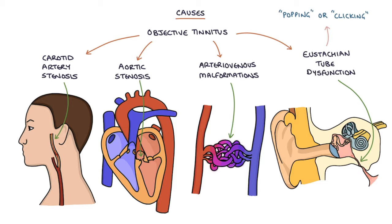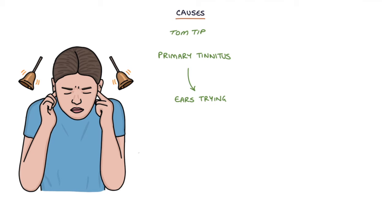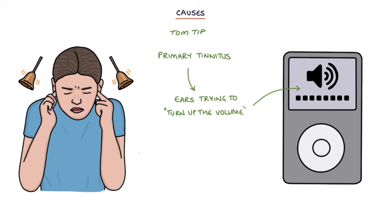A Tom tip for you, I think of primary tinnitus as the ears trying to turn up the volume when they cannot hear the surrounding noises as well. This is a helpful way of explaining it to patients who have tinnitus associated with hearing loss.